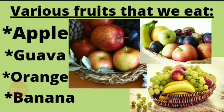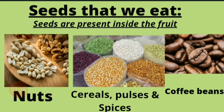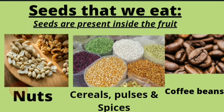Various fruits that we eat. Iske saath hi saath, hum alag-alag tarah ke phaalon ko bhi khaate hai — aur isse to sabhi parichit hai. Apples, guava, orange, banana, pears — yeh sabhi paudhe ke fruits wale hisse hote hai. Hum seeds ko bhi khaate hai. Phaalon ke andar seeds present hote hai, so seeds are present inside the fruits. Nuts, cereals, pulses, spices, coffee beans — yeh sabhi paudhe ke beej wale hisse hote hai.